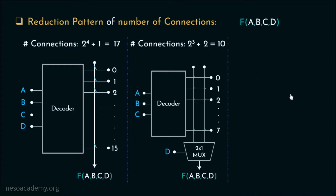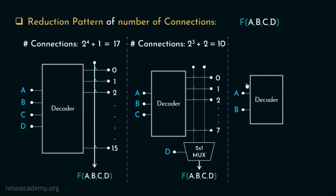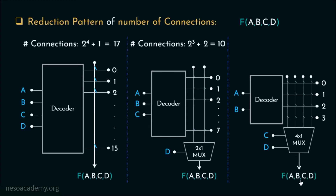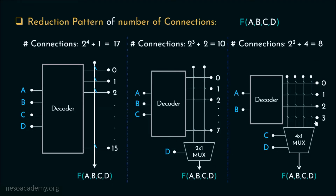Now let's see what happens if we introduce a 4-by-1 multiplexer. We will require a 2-to-4 decoder where A and B are the input lines and the 4 output lines represent all combinations of A and B. Through the select lines of the 4-by-1 multiplexer, the remaining variables C and D are fed in, handling all combinations of C and D. The number of connections is 2² + 4 = 4 + 4 = 8. So with increasing multiplexer configuration, we reduced connections from 17 to 10 to 8.